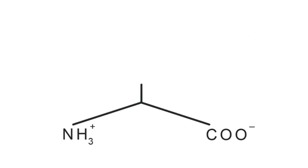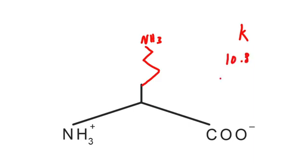To draw lysine one more time: lysine is K. We draw the branched parts of the K, add our amino group, and connect everything up. The pKa of lysine is about 10.8, which if you round it to 11, K is the eleventh letter of the alphabet. That helps me remember it, and hopefully it'll help you too.